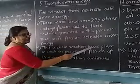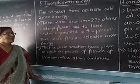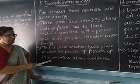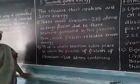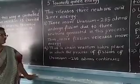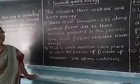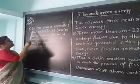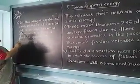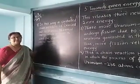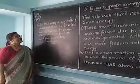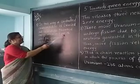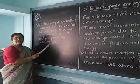Thus a chain reaction takes place, in which the process of fission of uranium-235 atoms always continues. A controlled chain reaction is carried out to release thermal energy, which in turn is used for generating electrical energy.